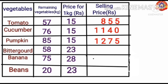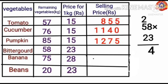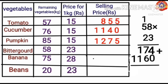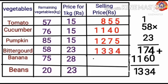Next, find the selling price of bitter gourd. To find out this, multiply 58 and 23. 58 into 23: 3 into 8 is 24 — write 4 here and 2 is the carryover. 3 into 5 is 15, plus 2 is 17. 2 into 8 is 16 — write 6 here and 1 is the carryover. 2 into 5 is 10, plus 1 is 11. Adding together: 4 plus 0 is 4; 7 plus 6 is 13 — write 3 here and 1 is the carryover; 1 plus 1 plus 1 is 3; giving 1334. Selling price of bitter gourd equals Rs. 1334.